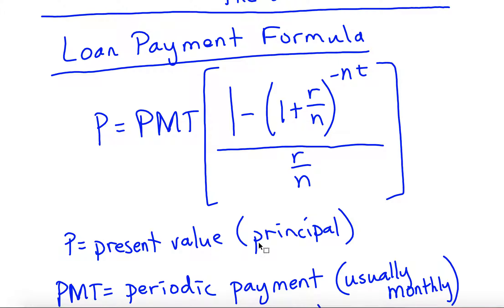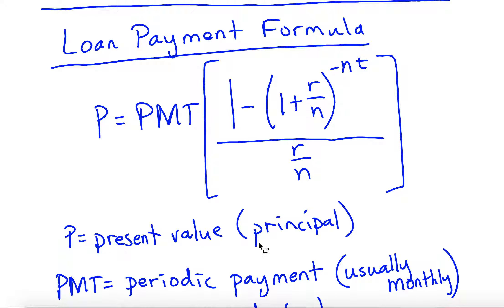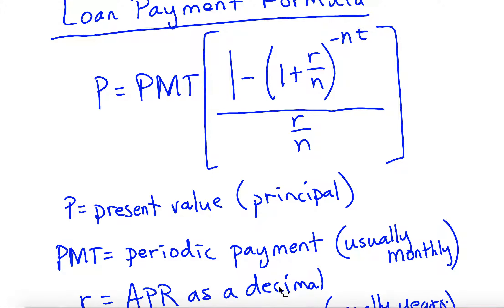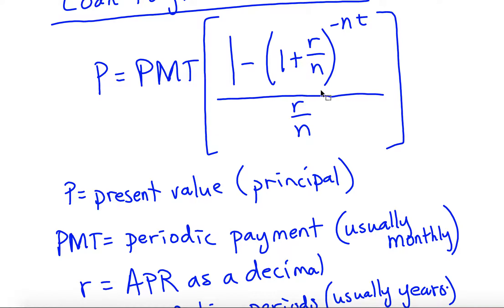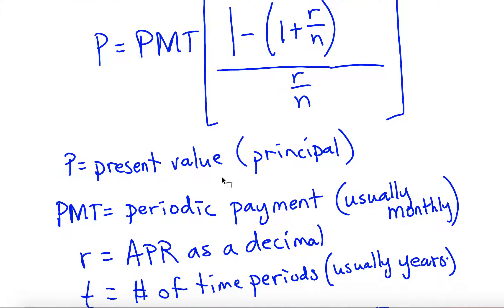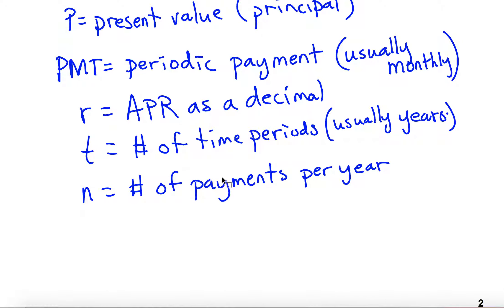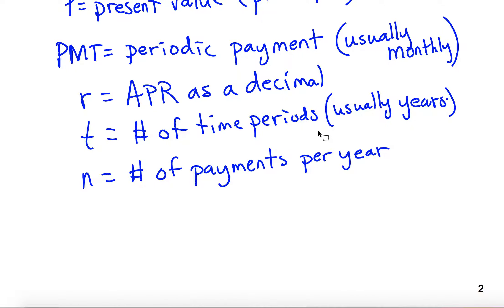Present value is your principal — what you actually started with. Your payment is your periodic payment, usually monthly because loans are typically paid that way. Your R is your annual percentage rate. N is usually 12 because you're paying monthly — it's how many payments you make per year. T is how many years you want to go for, and it's always in years.